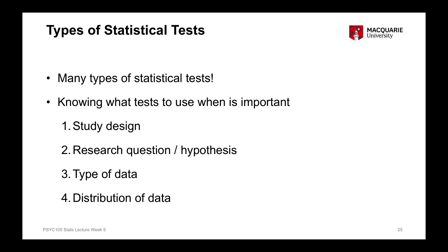The answer to that question depends on a few different things. Firstly, the design of the study itself — how the study is actually designed, what's been manipulated versus not manipulated. It also depends on the research question and the hypotheses the researcher predicts. It also depends on the type of data — categorical variables as opposed to numeric variables will dictate what sort of tests we use. But it also depends on the distribution of the data, specifically whether a continuous numeric variable is normally distributed or not, which will also dictate what kind of statistical test we run.